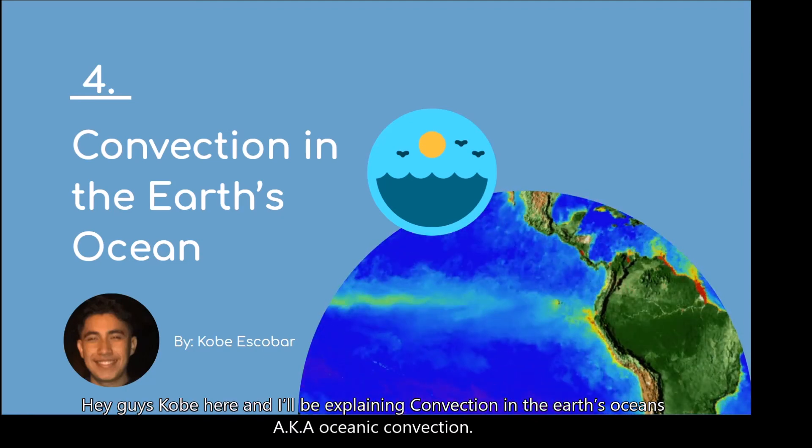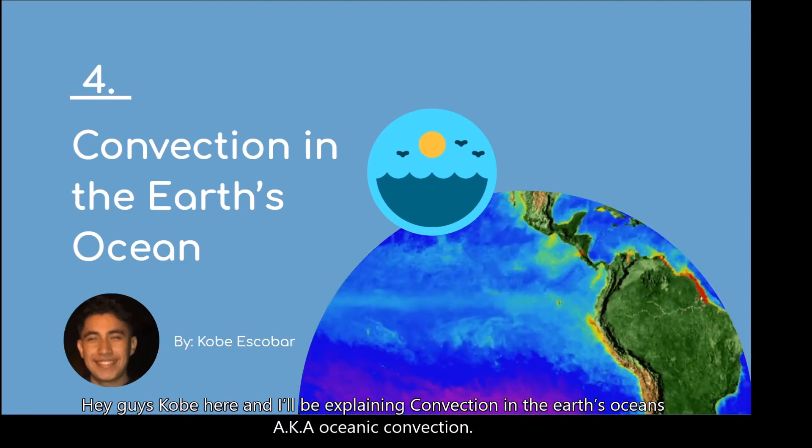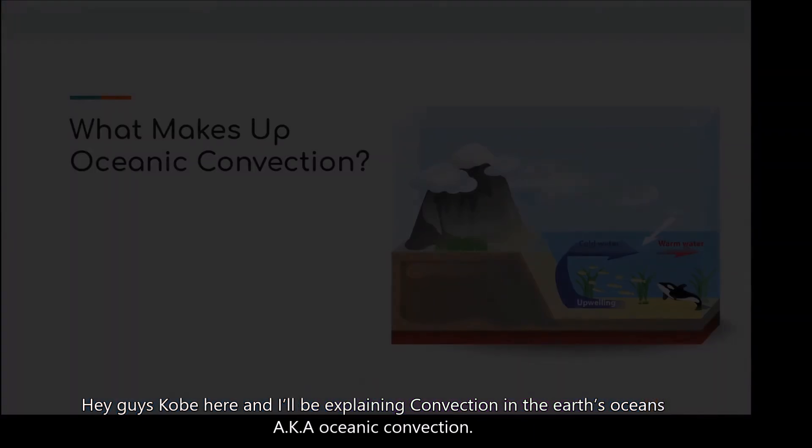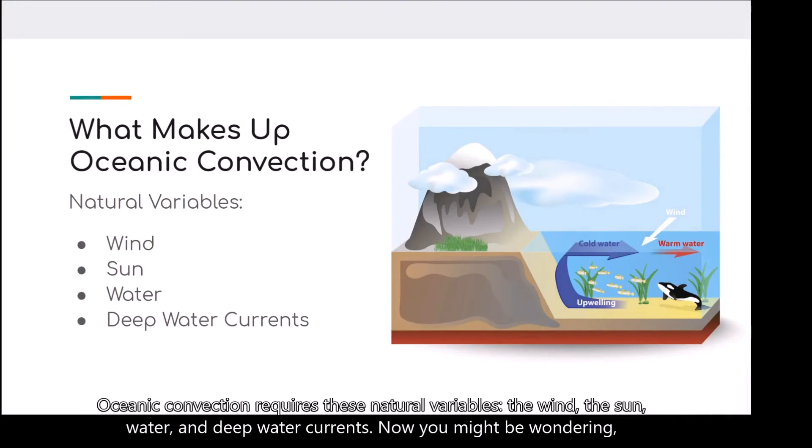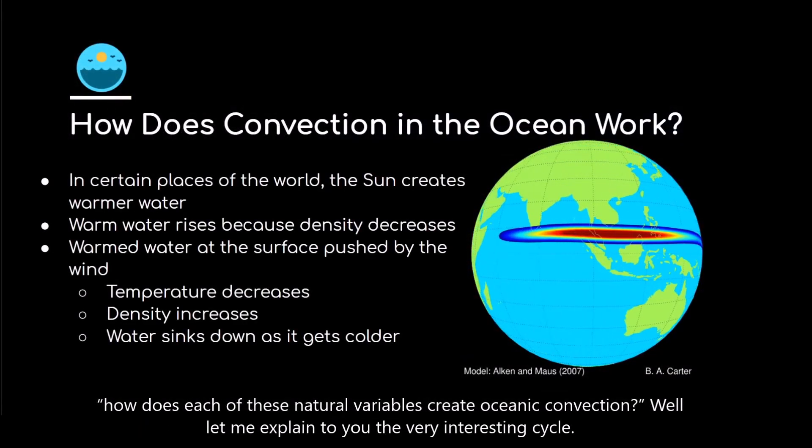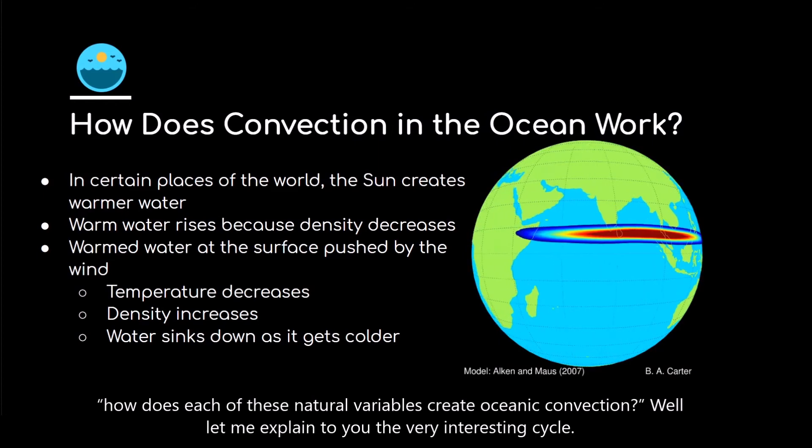Hey guys, Kobe here, and I'll be explaining convection in the Earth's oceans, aka oceanic convection. Oceanic convection requires these natural variables: the wind, the sun, water, and deep water currents. Now you might be wondering, how does each of these natural variables create oceanic convection? Well, let me explain to you the very interesting cycle.